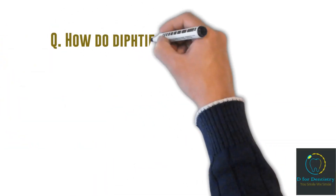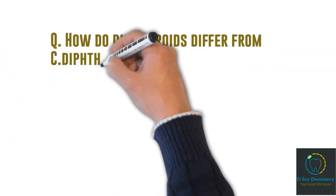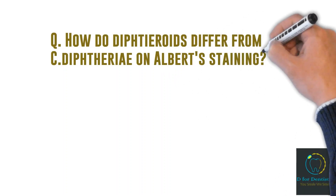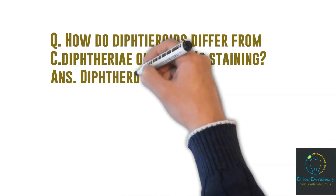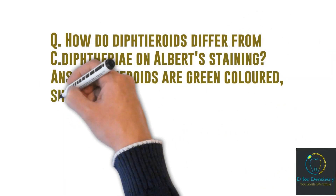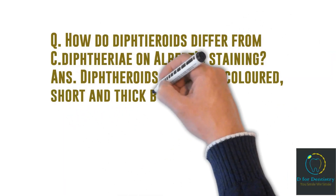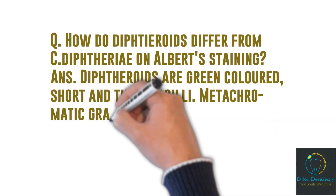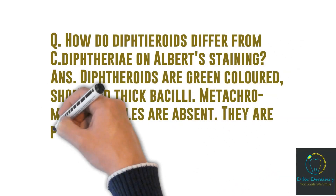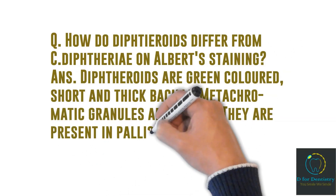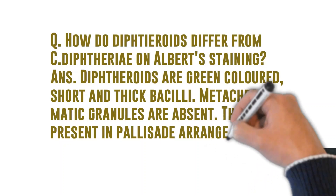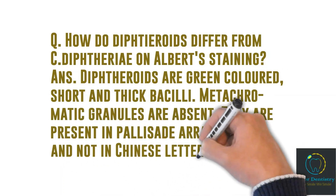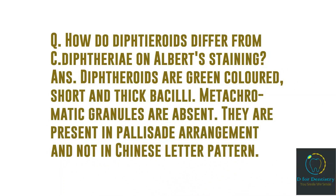Question: How do diphtheroids differ from C. diphtheriae on Albert's staining? Answer: Diphtheroids are green colored, short and thick bacilli. Metachromatic granules are absent. They are present in palisade arrangement and not in the Chinese letter pattern.